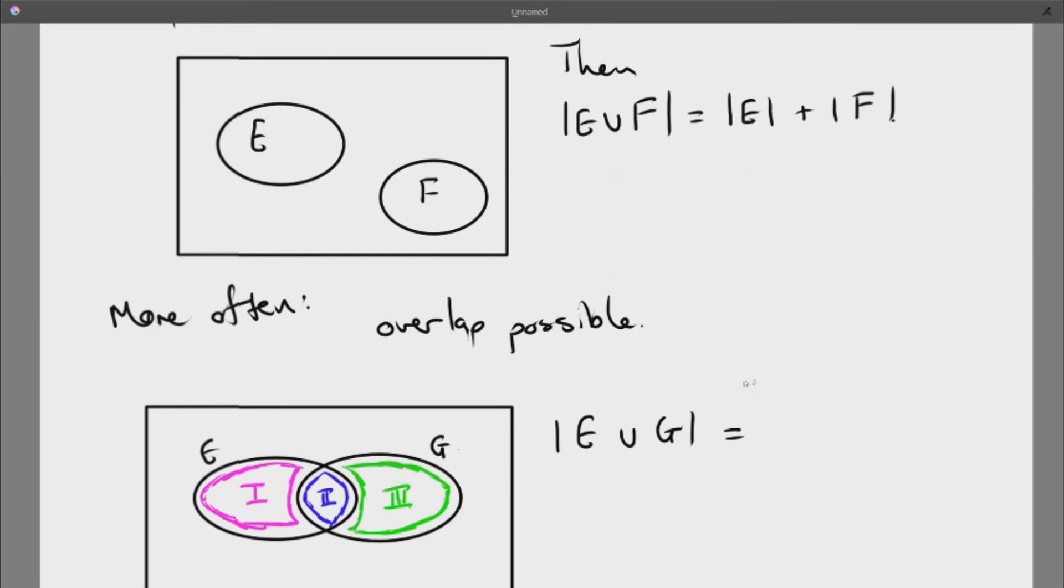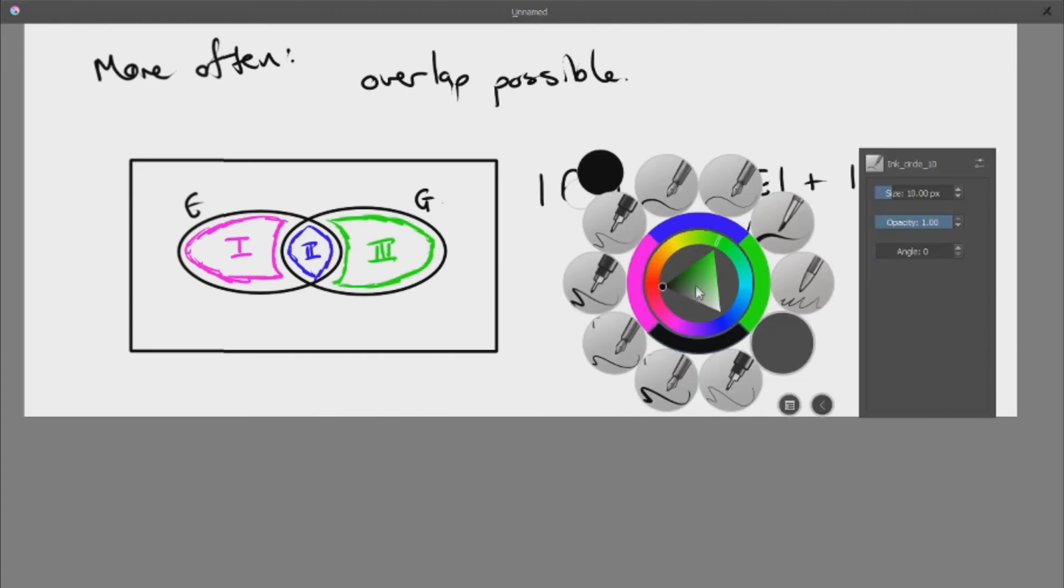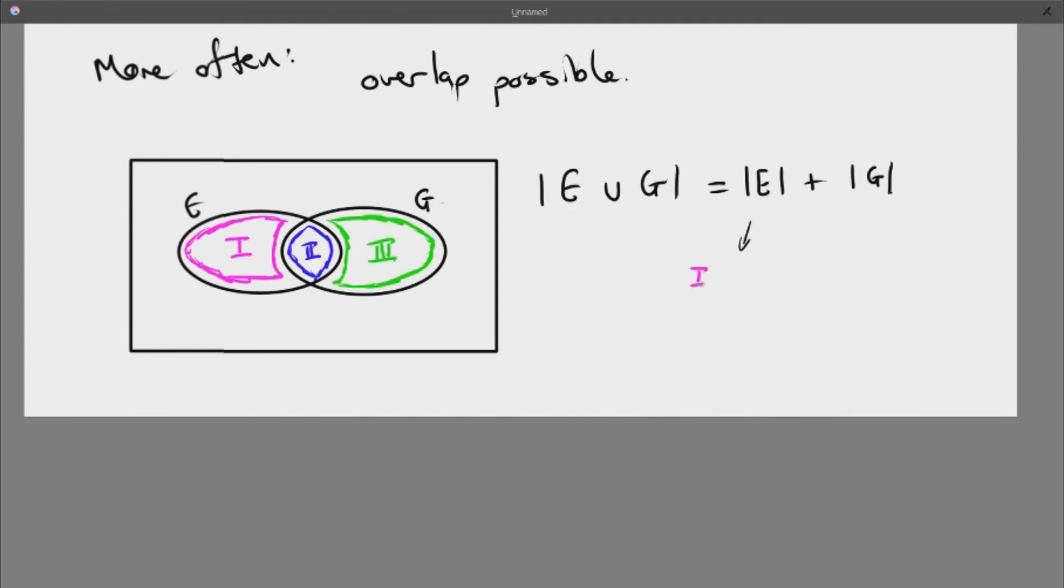If I wanted to have it look similar to before, because I am looking for the number of elements in the union, I want it to look similar. Then I want to start it out at least to look the same.